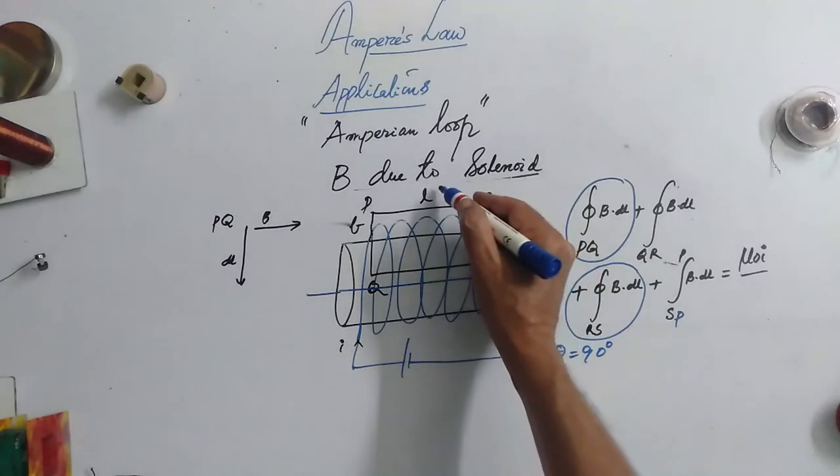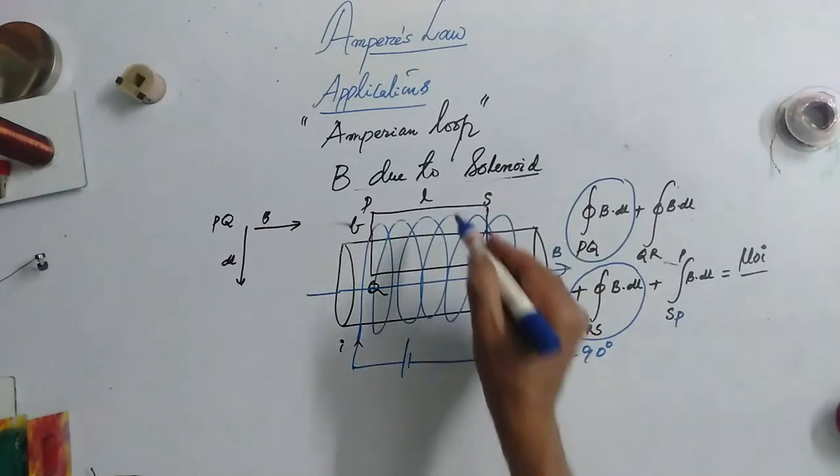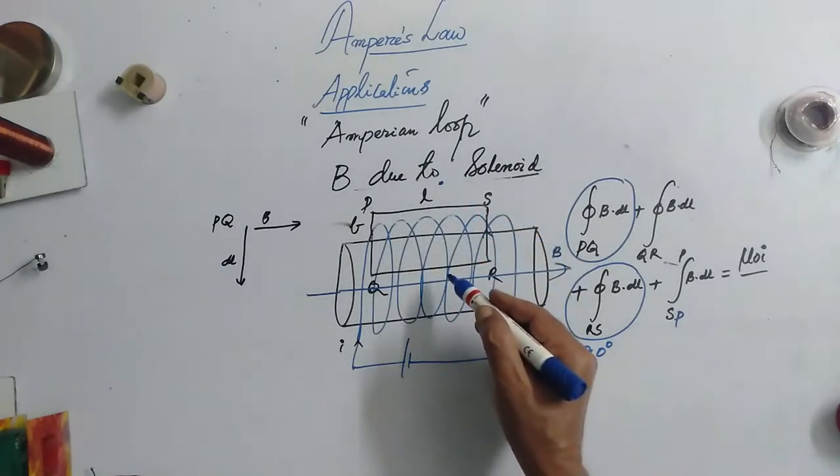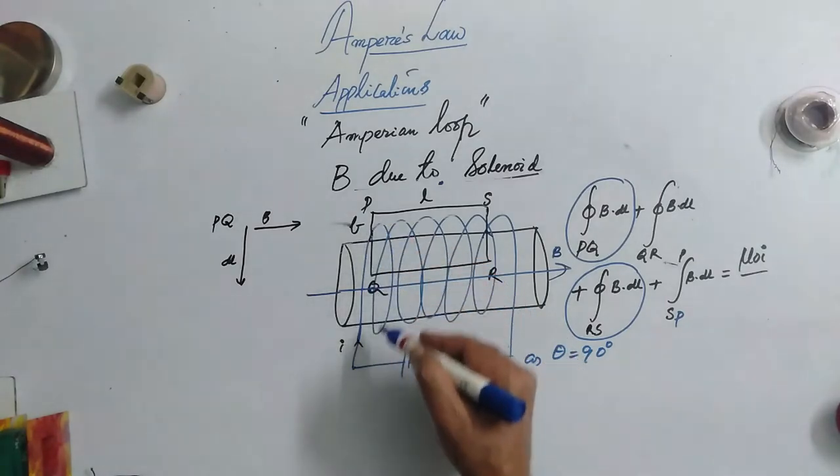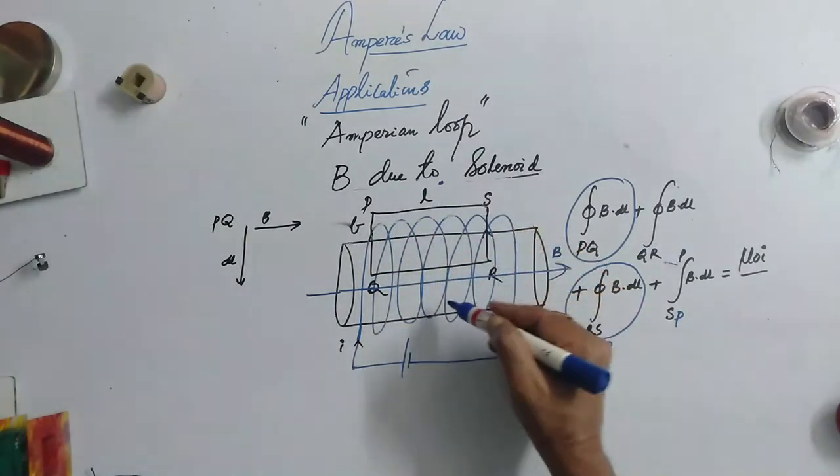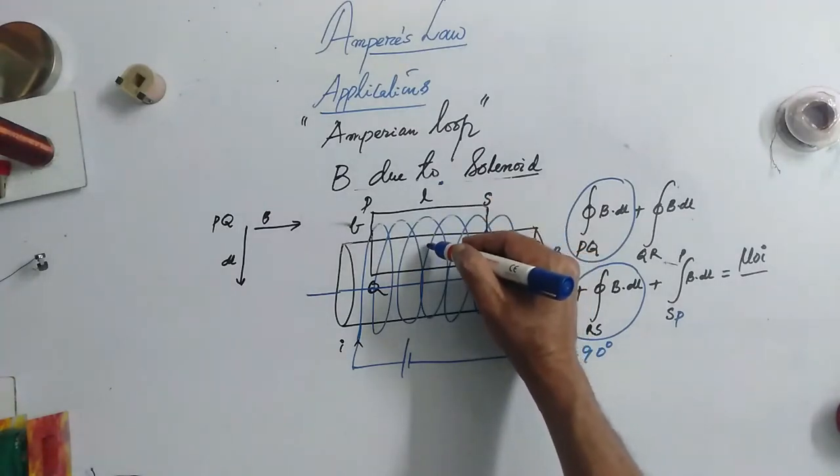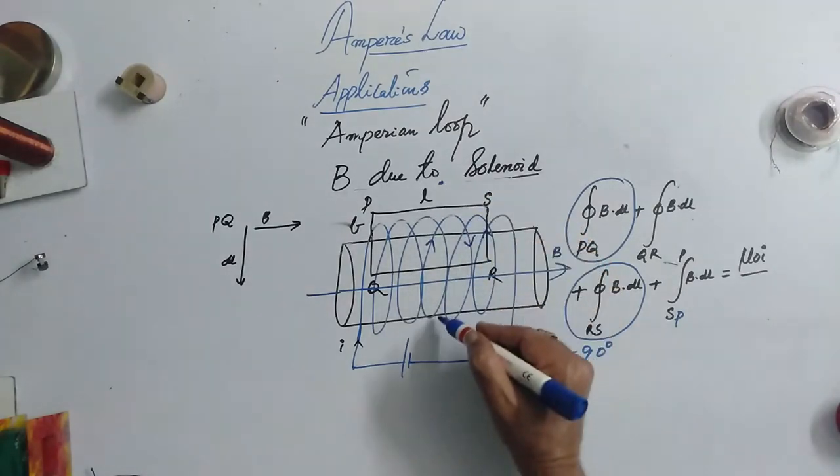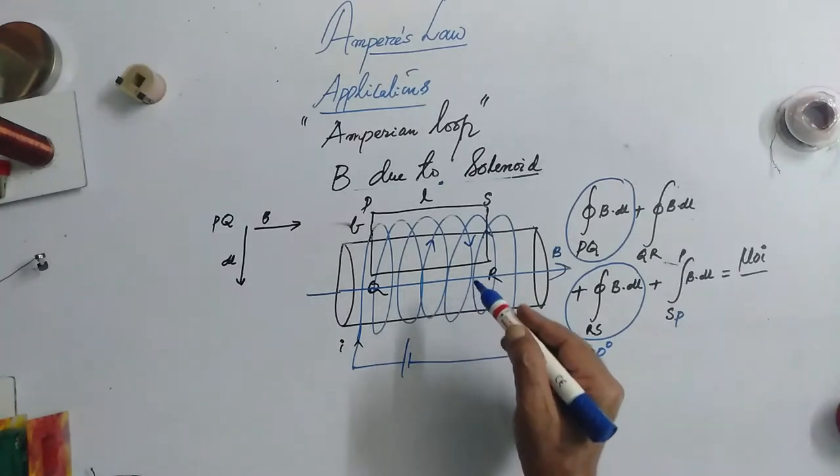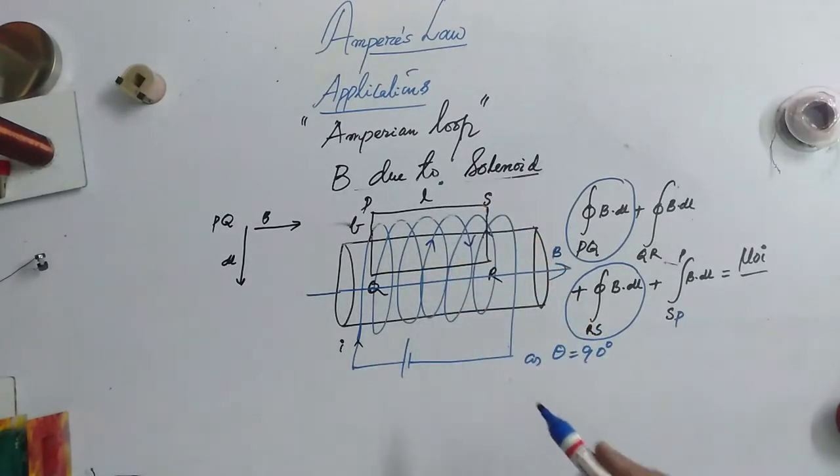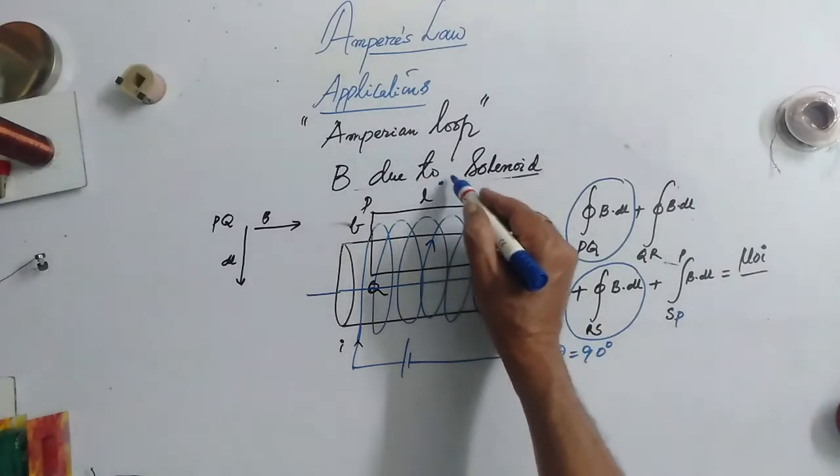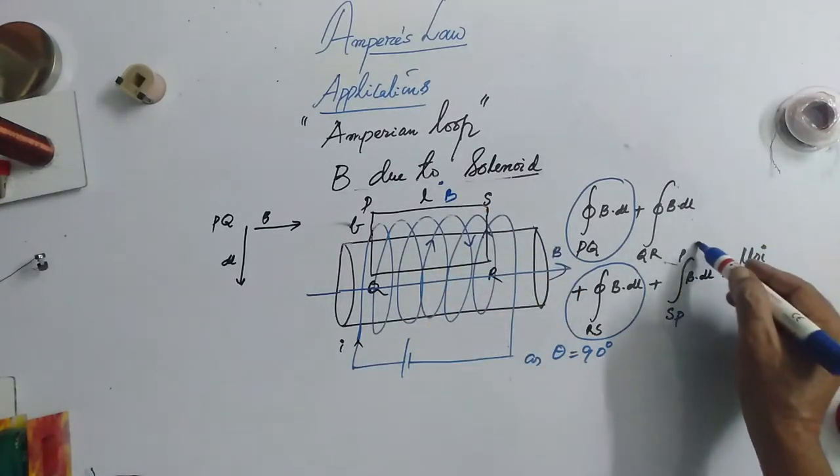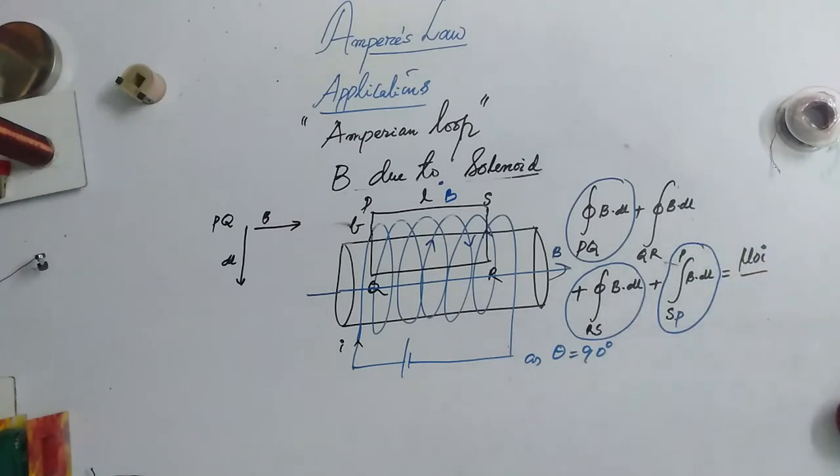Now, if an observer is standing here at this particular position and if he observes, for him, this is the current direction. So, current coming out, suppose if he is looking at this particular loop, if the current is coming out towards him is always equal to current going away from him. Therefore, the magnetic field is getting cancelled. So, therefore, this will be 0. The magnetic field here B will be 0. So, that's the reason why we can cancel out this and we can put this also 0.